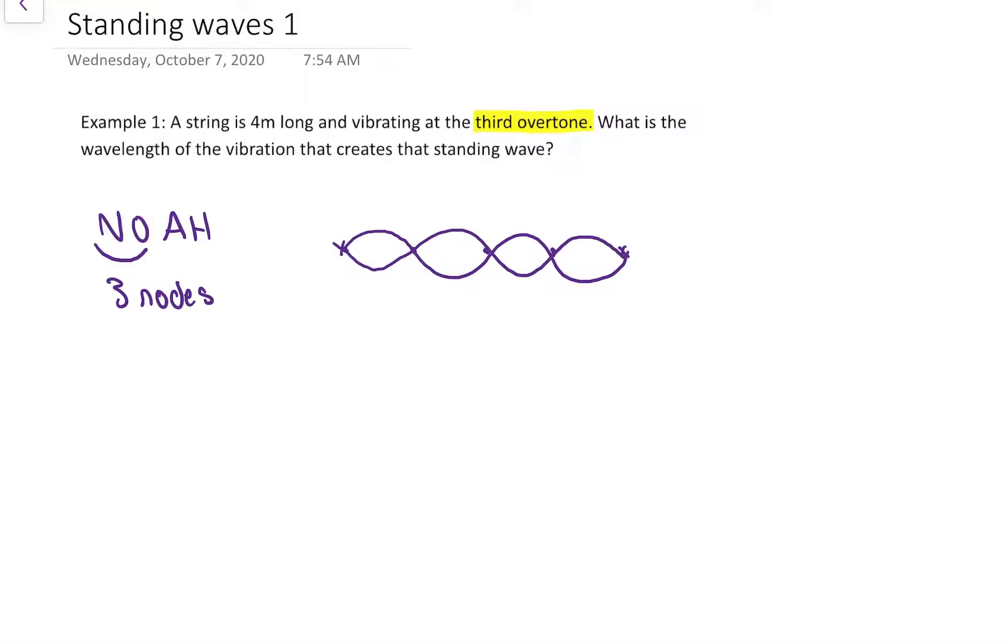Once I've drawn the standing wave then I just have to look at it. Each one of these I call a football shape. Each one of those is half a wavelength. That means looking at this picture I've got one, two, three, four football shapes, or I've got two full lambdas fitting into the length of the string.